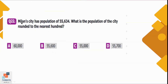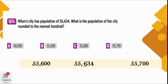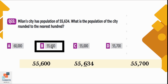Question number 22: Milan city has a population of 55,634. What is the population rounded to the nearest hundred? The number 55,634 lies between 55,600 and 55,700. Since 634 is closer to 600, we round to 55,600. Option B is the correct option.